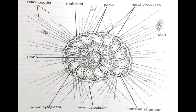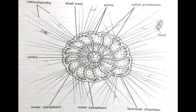Alphidium crispum structure: cytoplasm. All the shell chambers of living Alphidium crispum are filled with a mass of inner cytoplasm, besides a thin layer of outer cytoplasm that invests the entire shell, which makes the shell internal rather than external.